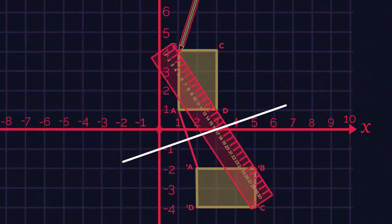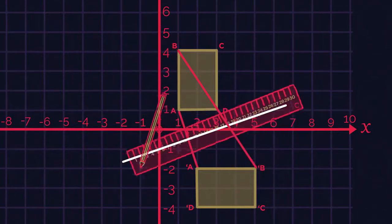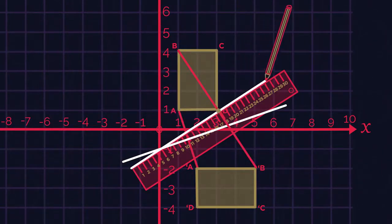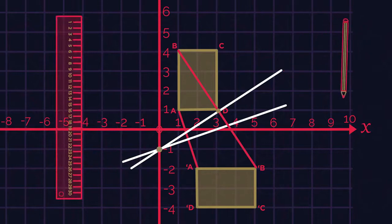Now do the exact same thing but for the joining points B and B'. Where the two lines cross is the centre of rotation. So at 0, negative 1. Simple.